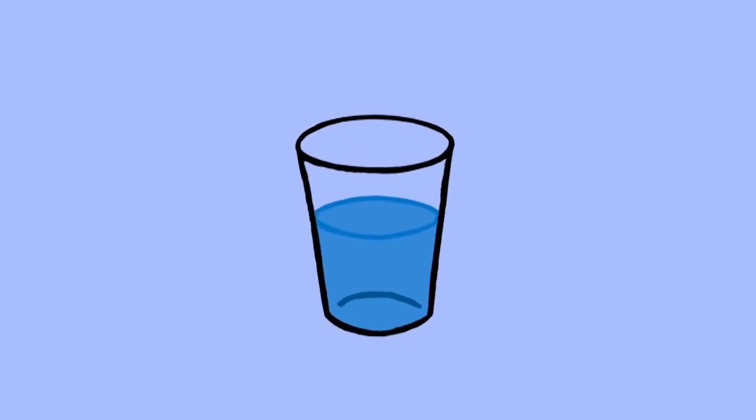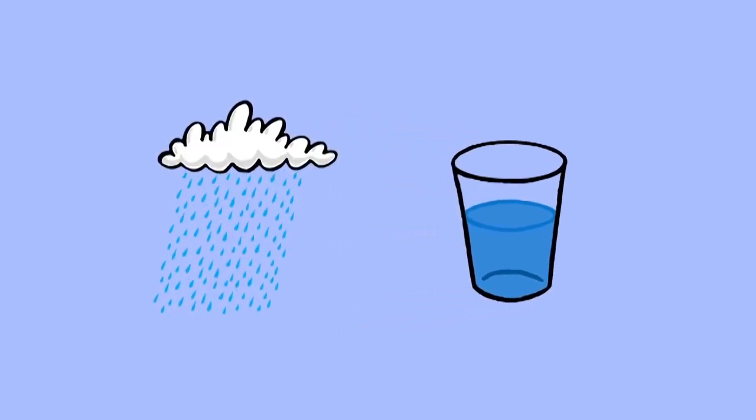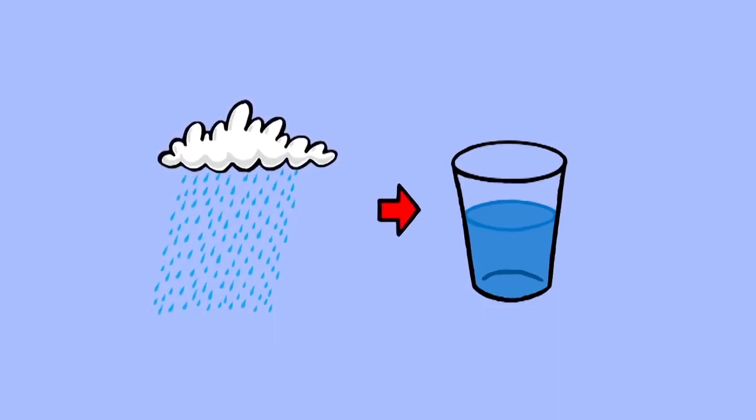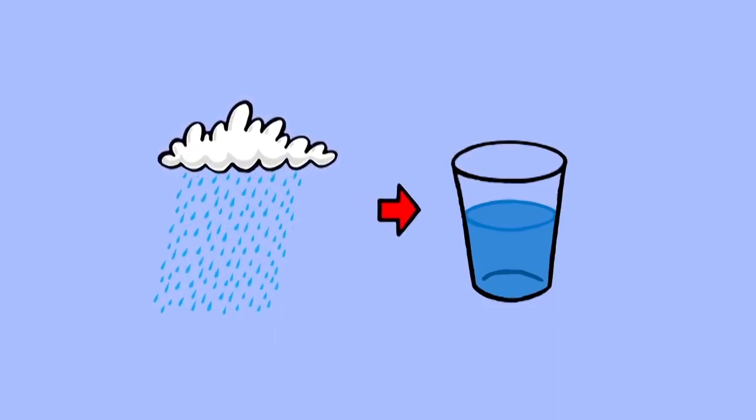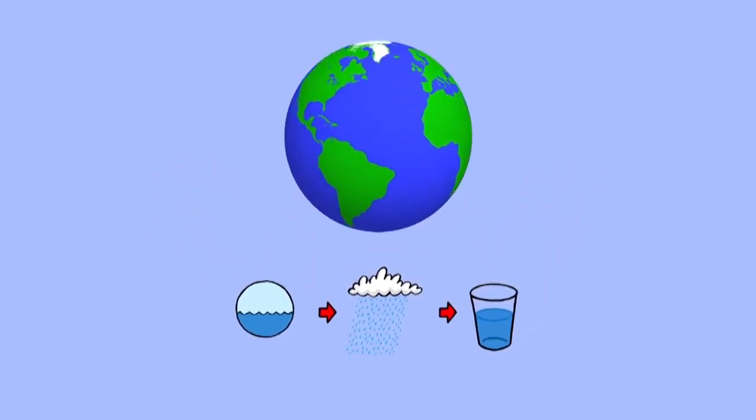When you drink a glass of water, what you may not realize is that the water you're drinking once fell from the sky, possibly any time from a few days to a few years ago, and that the water that fell from the sky was once part of the ocean. In fact, the water that you've just used to quench your thirst may be as old as the Earth itself.